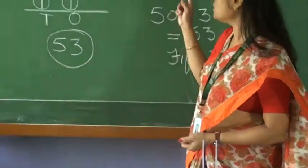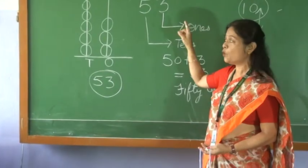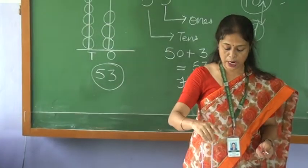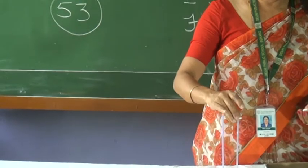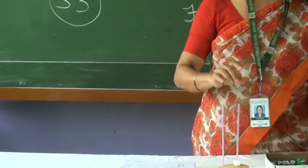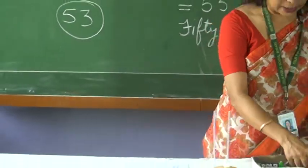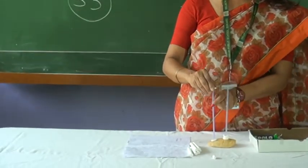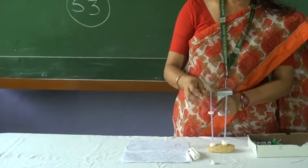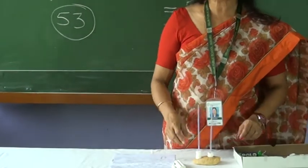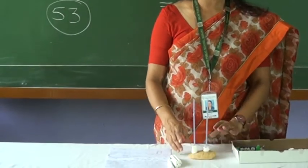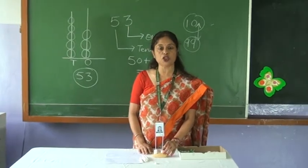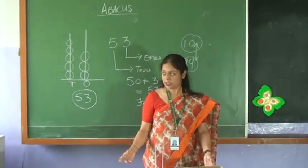So now the number on the board says 53. 3 is in ones place, so we will take 1, 2 and 3 — putting 3 polos in ones place. Now the number in tens place is 5, so let us count: 1, 2, 3, 4, 5 polos. So see children, the number is 53. Have you all understood? Same way you can do any number whichever you want to do.